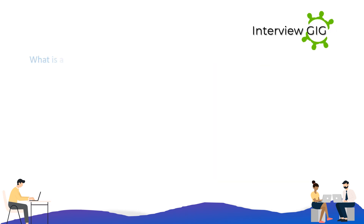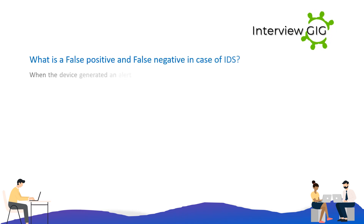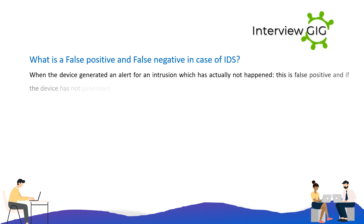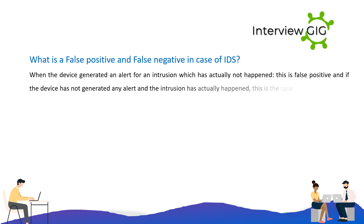What is a false positive and false negative in the case of IDS? When the device generates an alert for an intrusion which has actually not happened, this is a false positive. If the device has not generated any alert and the intrusion has actually happened, this is the case of a false negative.